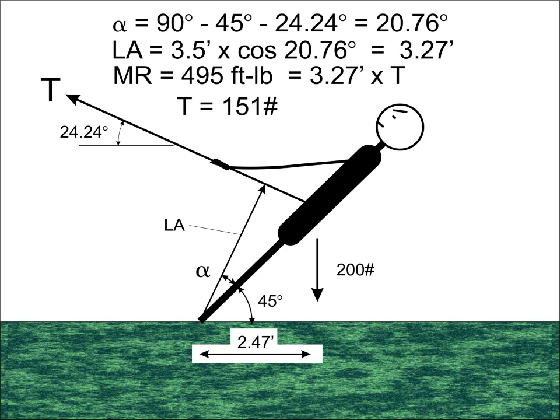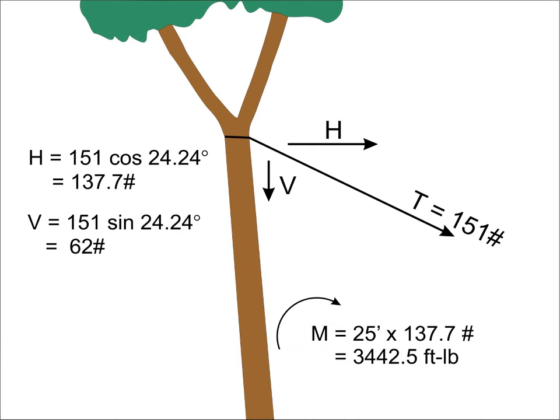Solving, we find that the tension in the rope is only 151 pounds. Note that it doesn't matter how strong our guy is, the tension is primarily a function of his weight and lean angle. So, what does the tree experience from that tension? The tension can be resolved as a vertical force down the trunk, which we can ignore, and as a horizontal component of 137.7 pounds, which will act on a 25 foot tall lever arm to create a moment of 3,442.5 foot-pounds.